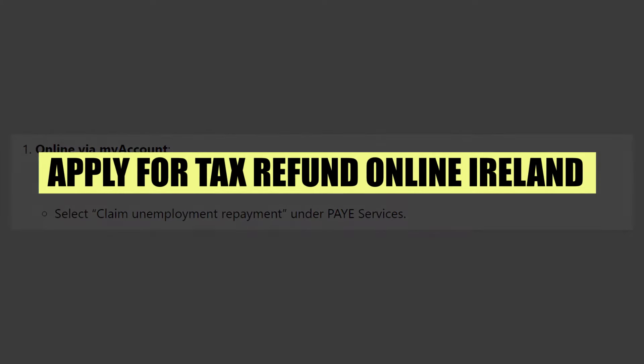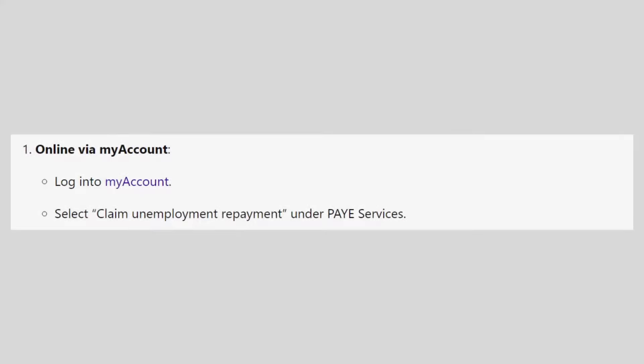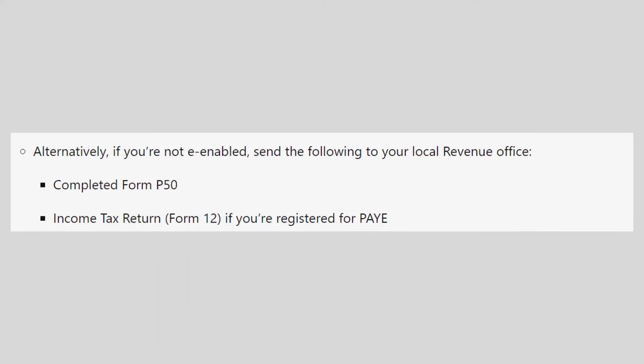In this video we will show you how to apply for a tax refund online in Ireland. If you want to get started with My Account, use the links in the description. Log into My Account and select 'Claim Unemployment Repayment' under PAYE Services. Alternatively, if you are not e-enabled, send the following to your local revenue office.